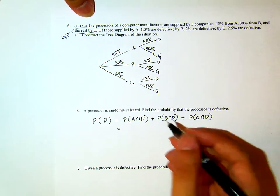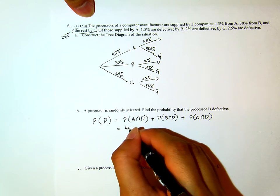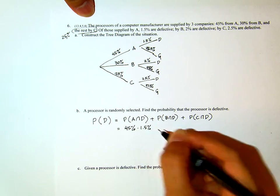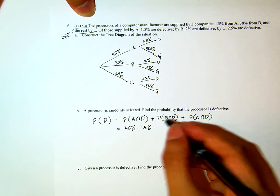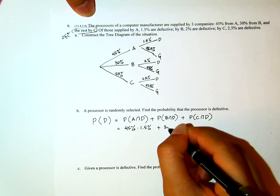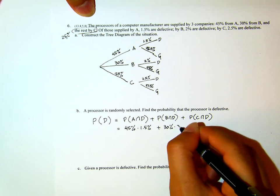Now, the probability that it is from A and defective is given by the product of this 45% and 1.5%. From B and defective, it would be 30% times 2%.